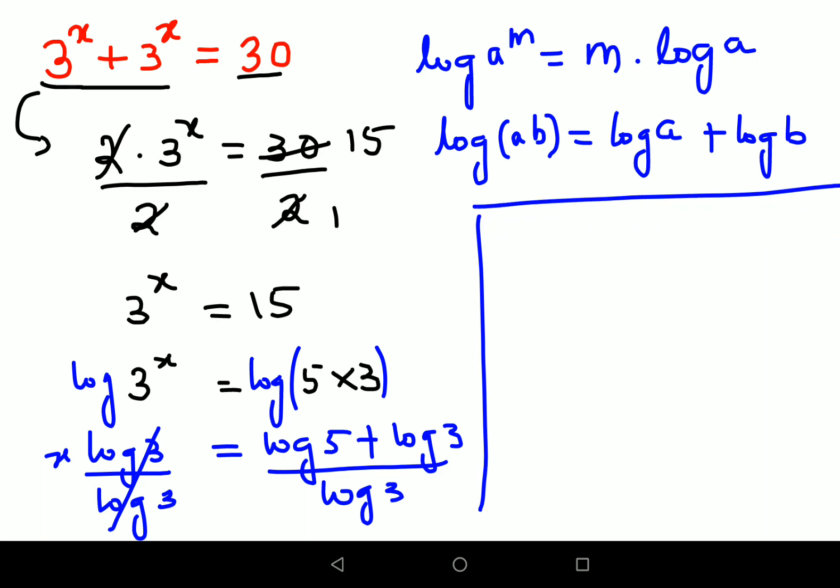upon log 3 plus log 3 upon log 3. So here your value of x can be written as, this is canceling so becoming 1.